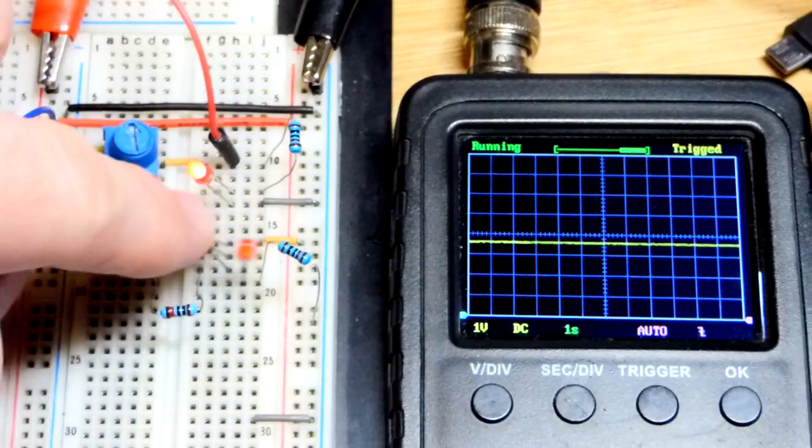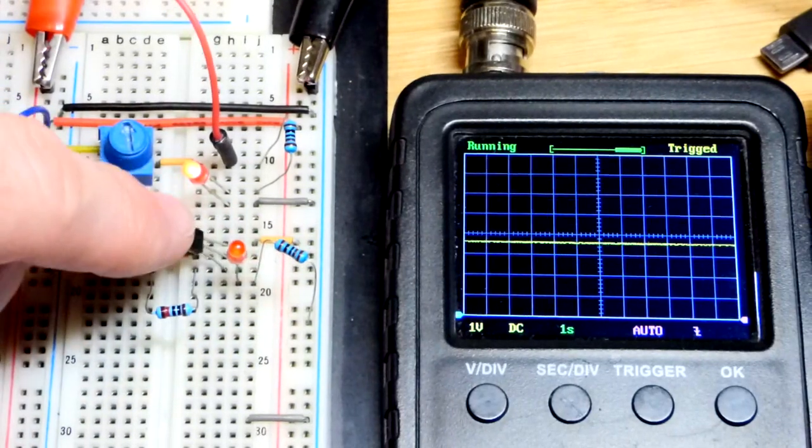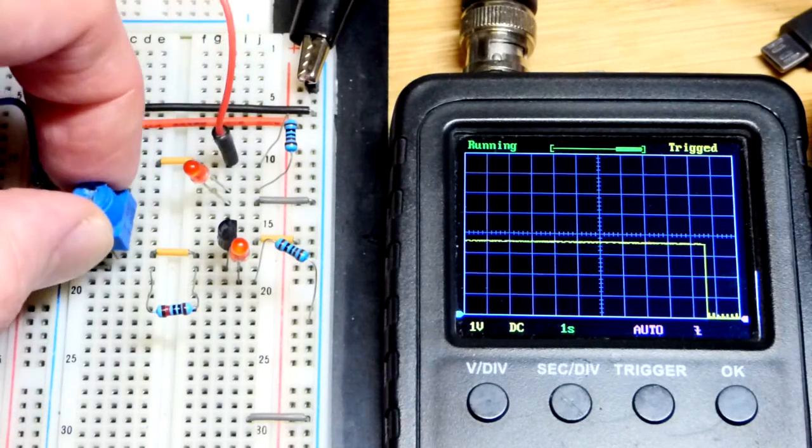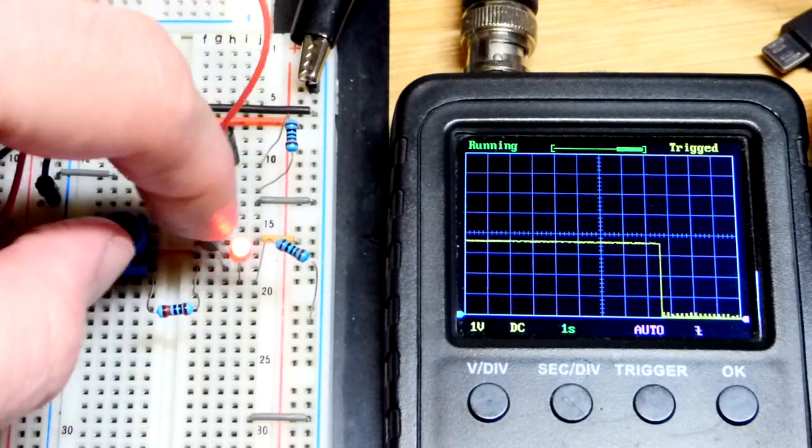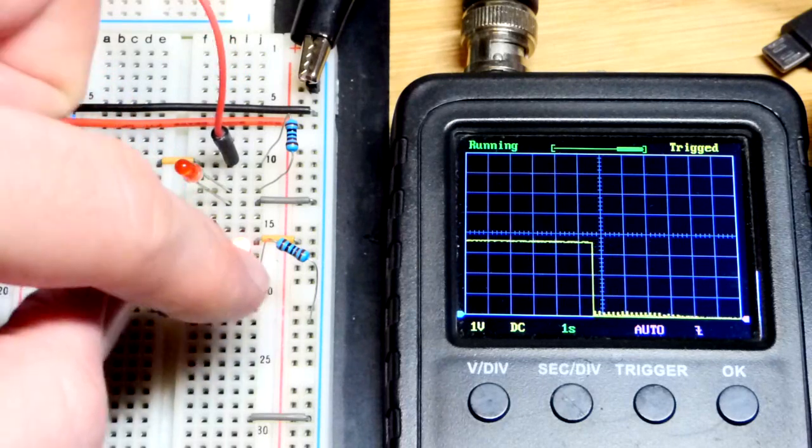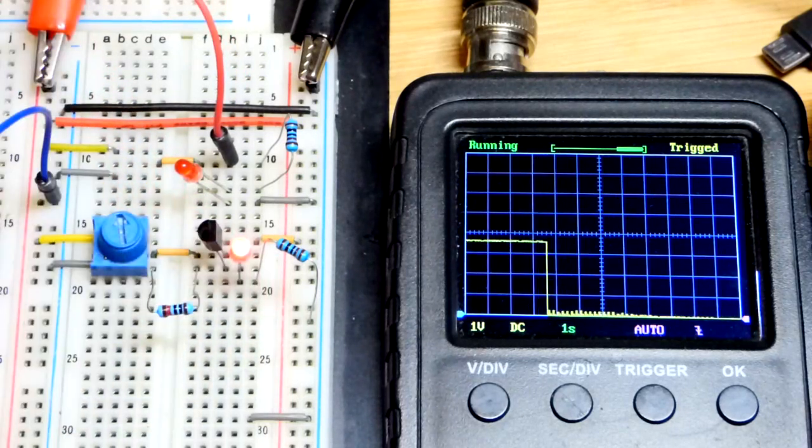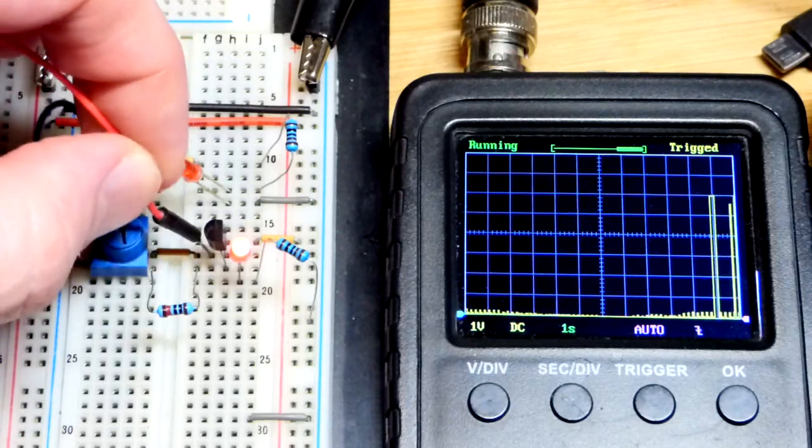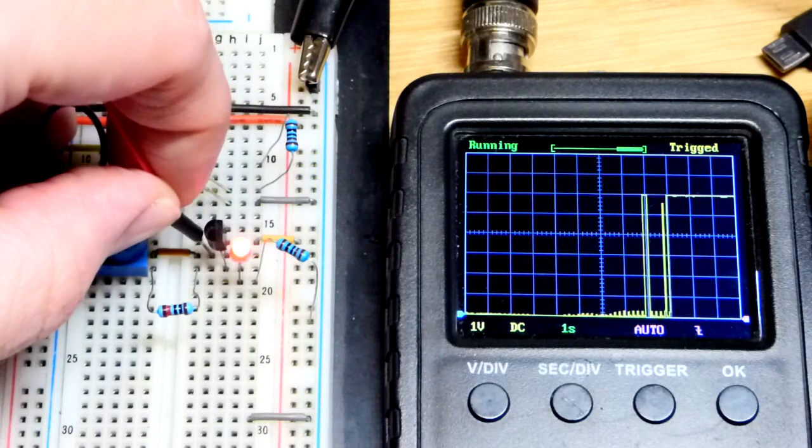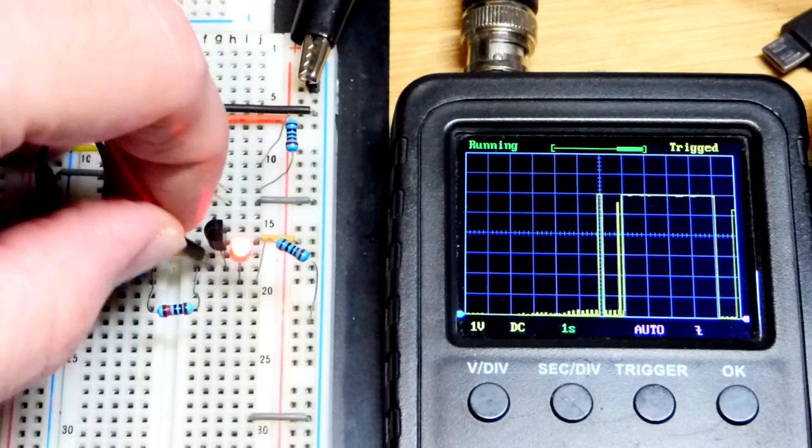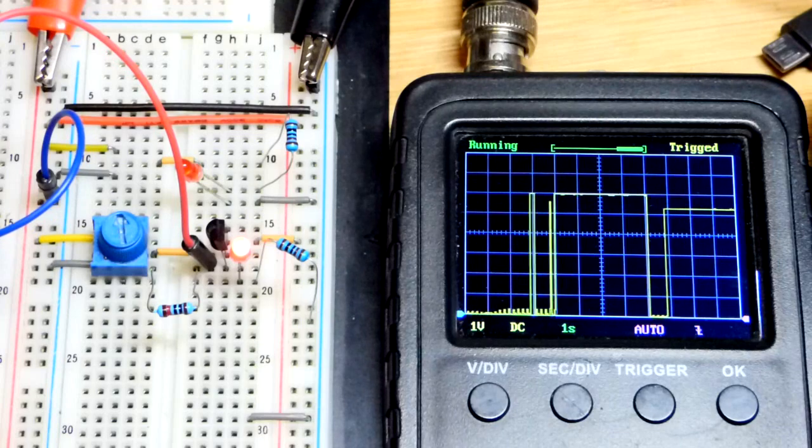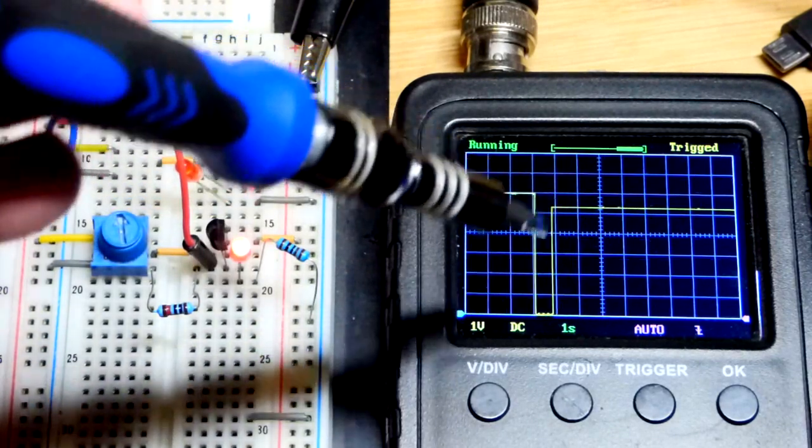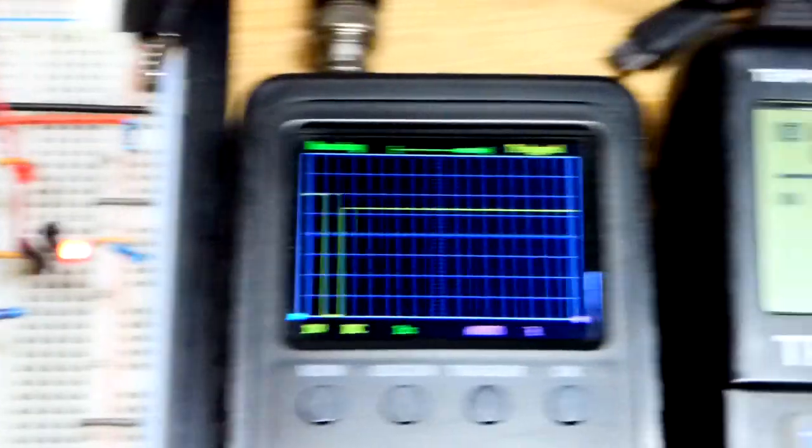So we have the NPN bipolar junction transistor wired as an emitter follower. If I move the trim pot down, the trim pot is going to tell the NPN bipolar junction transistor the voltage it wants across the load. But you won't get that full voltage. You'll see here that we still have the 6 volts at the trim pot. But if we come to the load, it's about 0.6 volts less. And whatever we set the trim pot to, we're going to have about 0.6 volts less across the load.